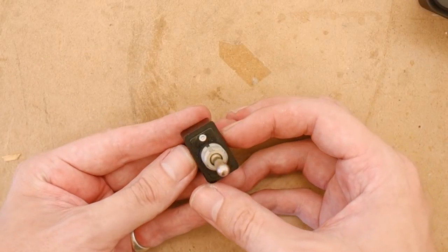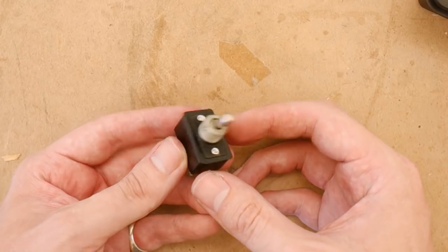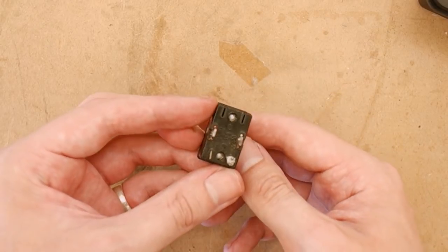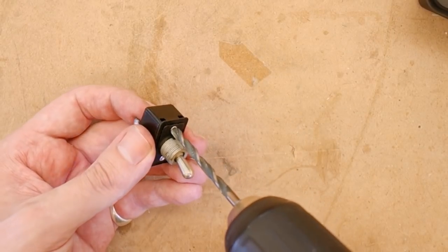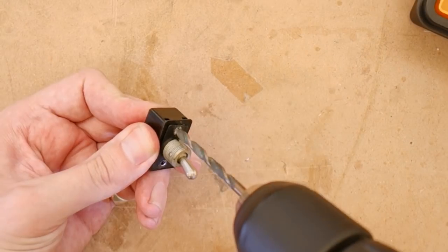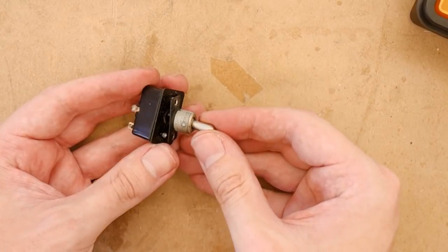What is quite common though is that some switches are riveted together, and for that there really isn't any way around drilling out the rivets. Don't worry, we're going to find a way of putting them back together even so.